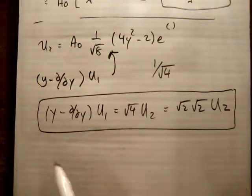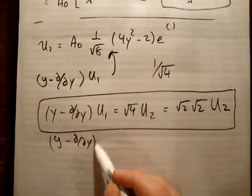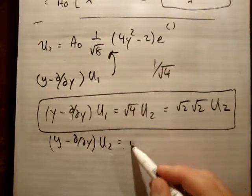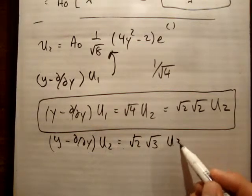So what we can say is as follows. What if we applied Y minus DDY on U2? I'm going to tell you this, that the answer is going to be root 2 times root 3 times U3. Okay?